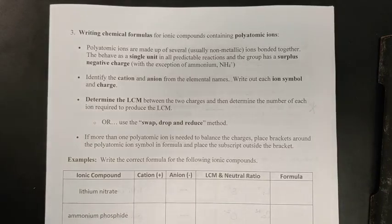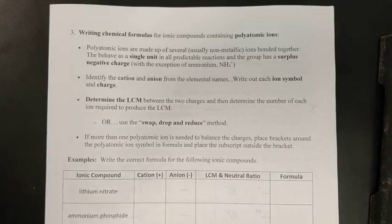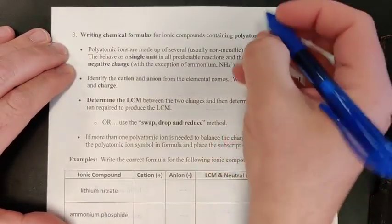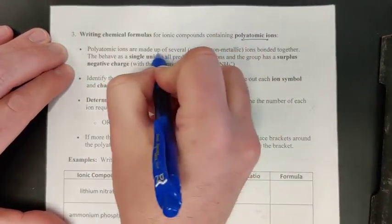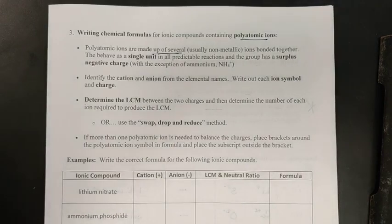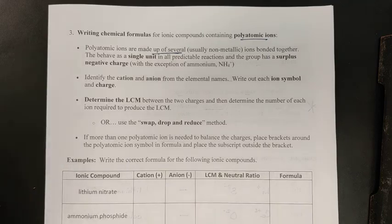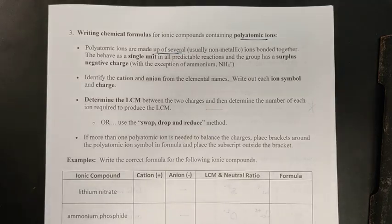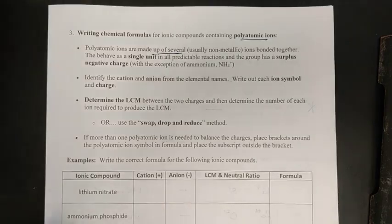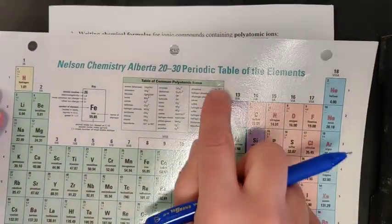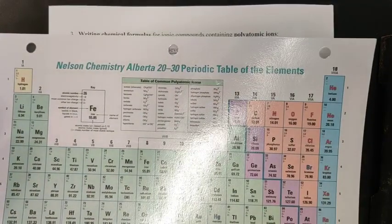Continuing with chapter 1.5, this is lesson number two. We're going to finish off our ionic nomenclature rules, this time for polyatomic ions and also ionic hydrates. Polyatomic ions are made up of multiple, usually non-metallic atoms bonded together. The easiest way to think about them is that they were trying to be molecular but somehow failed, and in this failure they developed a surplus charge. These polyatomic ion groupings tend to survive chemical reactions intact, so we treat them as single entities.